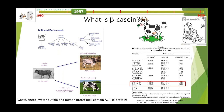We have to start with what is beta casein. The big thing is it's one of the major proteins in milk. In goat, sheep, buffalo, and humans, we all have beta casein type proteins with a number of different genetic variants. About 5,000 to 7,000 years ago, the A1 variant evolved. From what they can tell, A2 was there before A1.